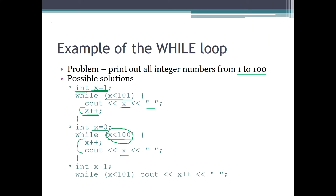One more possible solution: we can combine the two loop body commands into one using shorthand notation — 'cout << x++'. This is equivalent to first printing x and then incrementing x by one. Now we have only one command in the loop body, which means we can also omit the curly brackets.